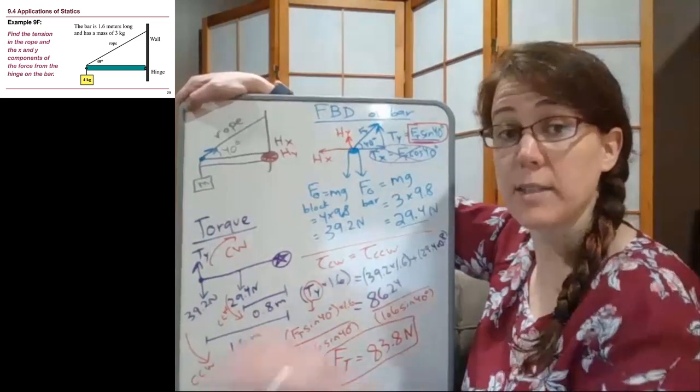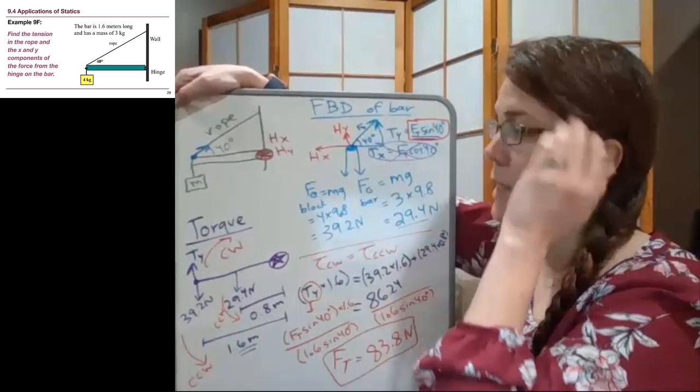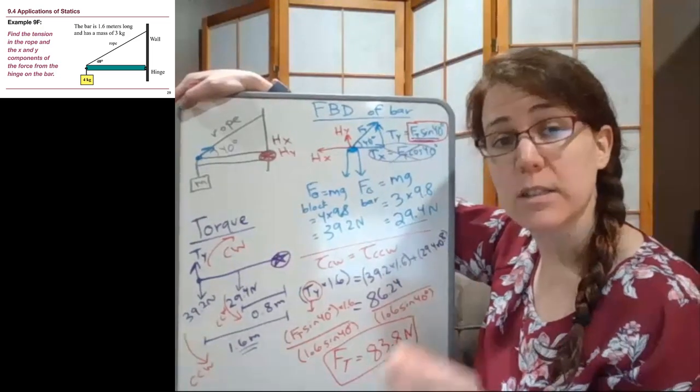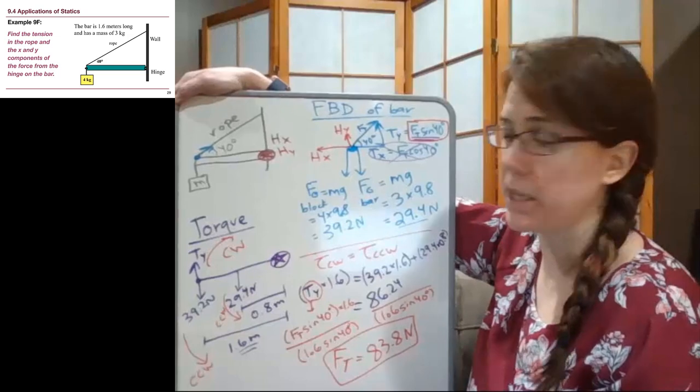Okay, so that is the tension in the rope. If we look back at the problem on our slide here, we're asked to find the tension in the rope and the x and y components of the force from the hinge on the bar.